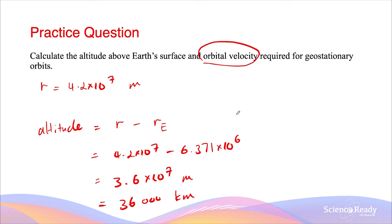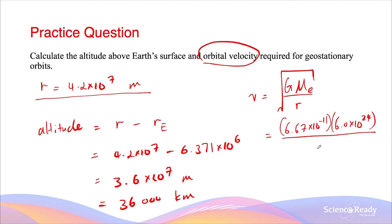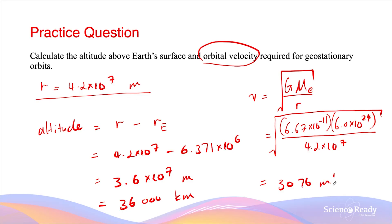For orbital velocity, the equation is v = √(GM/r), where M is the mass of the Earth. So we calculate the square root of (6.67 × 10⁻¹¹ × 6.0 × 10²⁴) divided by r. The radius here is not the altitude — it is the full orbital radius calculated from Kepler's third law: 4.2 × 10⁷ metres. This gives us a velocity of 3,076 metres per second.